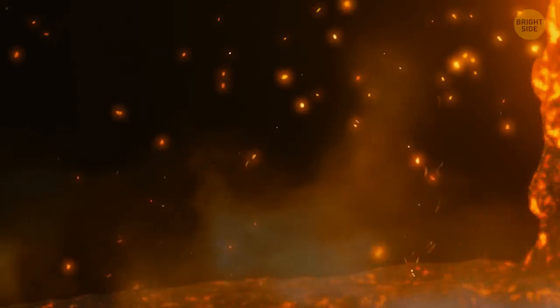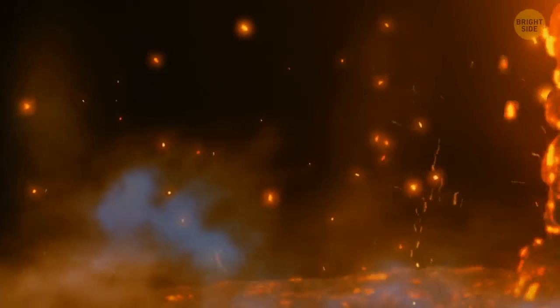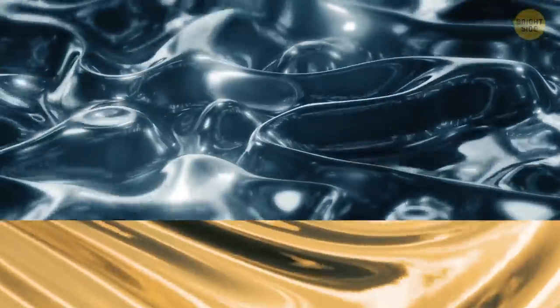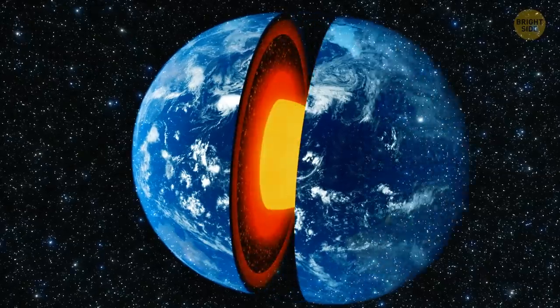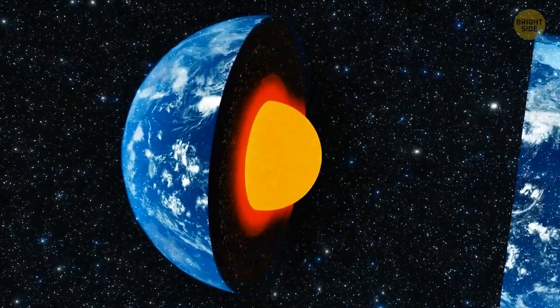Along with the destruction, the asteroids brought metals. But were there metals on Earth before that? Of course! The core of our planet is mainly made up of metals, such as iron.